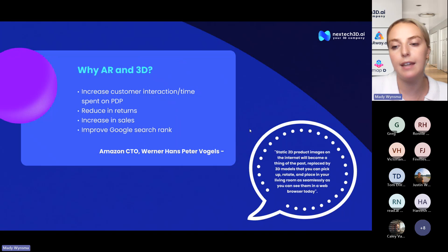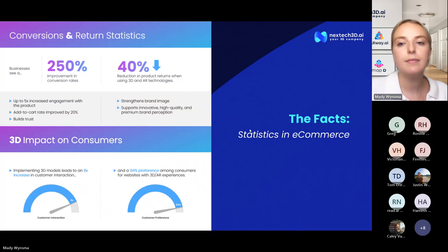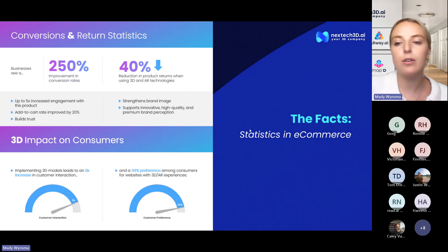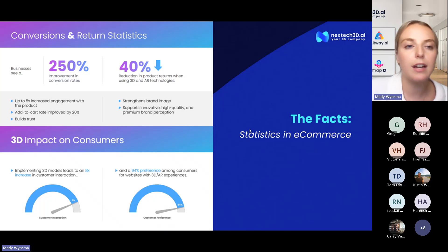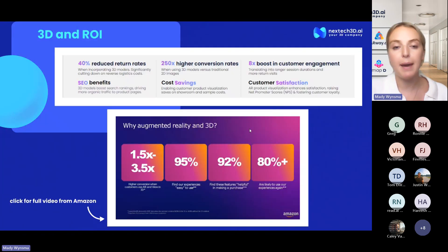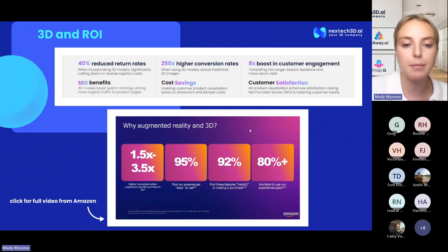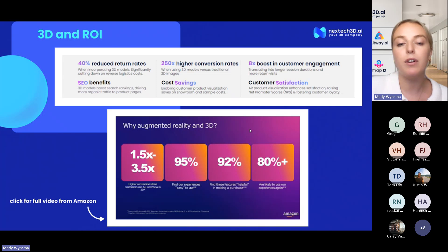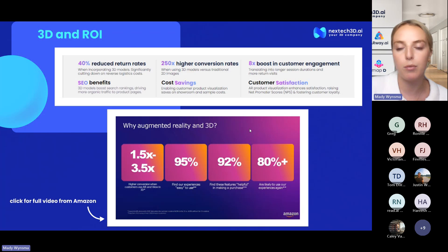Ultimately, 3D reduces returns and increases conversion and it has been boosting Google search as well — Google is also pushing for 3D modeling in the Google traffic tab. The conversion and return statistics are pretty dramatic when it comes to 3D. On average, our clients are seeing a 2.5x improvement in conversion rates and a 40% reduction in returns. We actually have some stats received directly from Amazon: their sellers are seeing anywhere from a 1.5 to 3.5x increase in conversion and over 95% customer satisfaction.